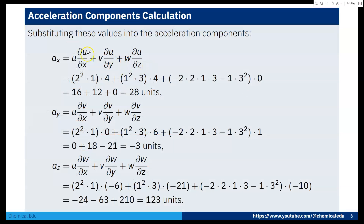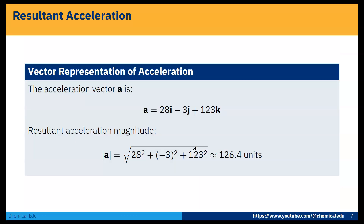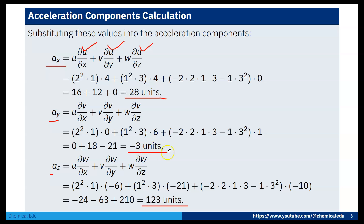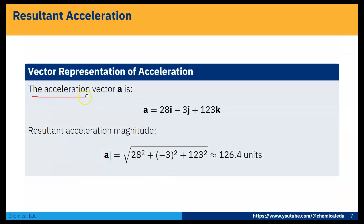Plugging all component values in: ax = 28 units, ay = −3 units, az = 123 units. The acceleration vector is a = 28i − 3j + 123k. The magnitude is |a| = √(28² + (−3)² + 123²) = 126.4 units.